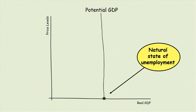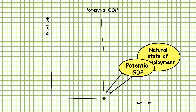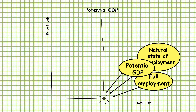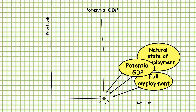Natural state of unemployment, potential GDP, and full employment all point to the same spot on the graph. This is the highest GDP value a country might achieve.